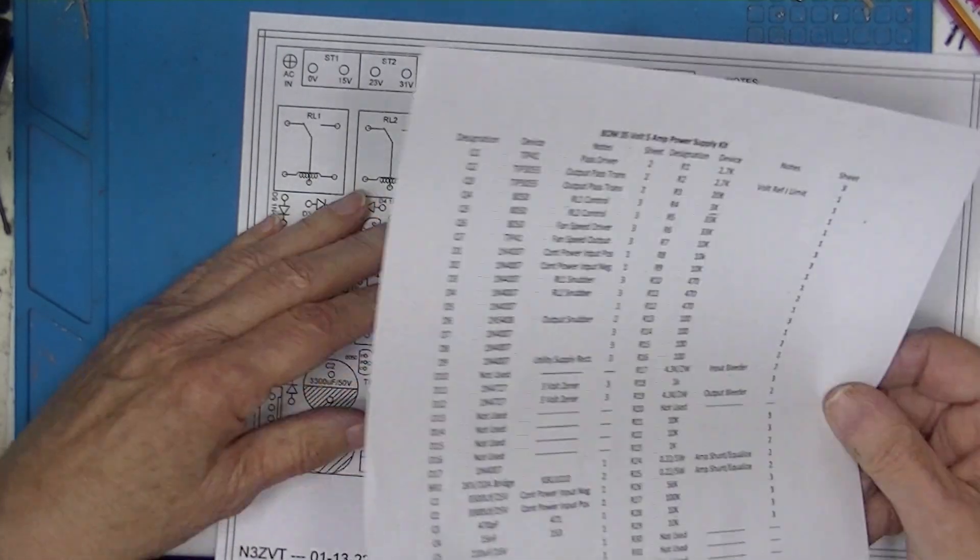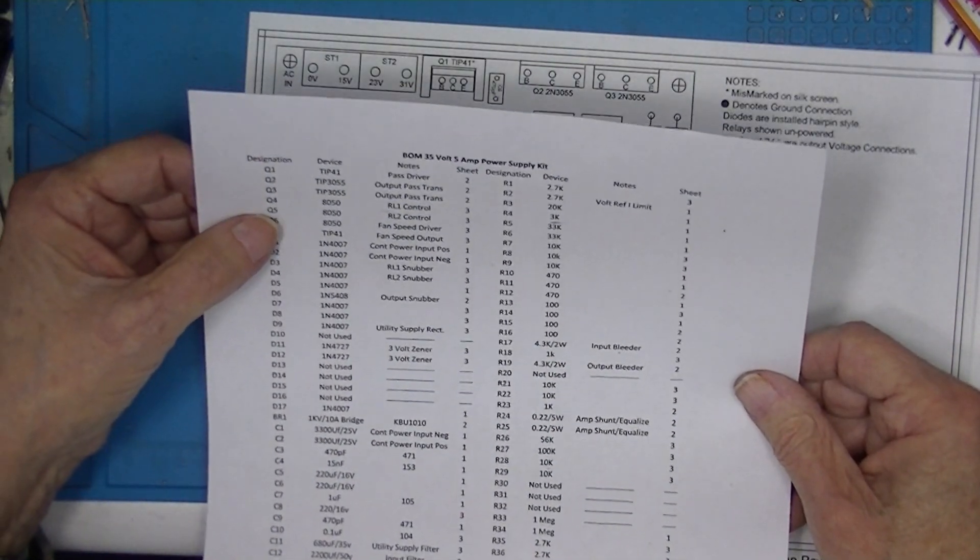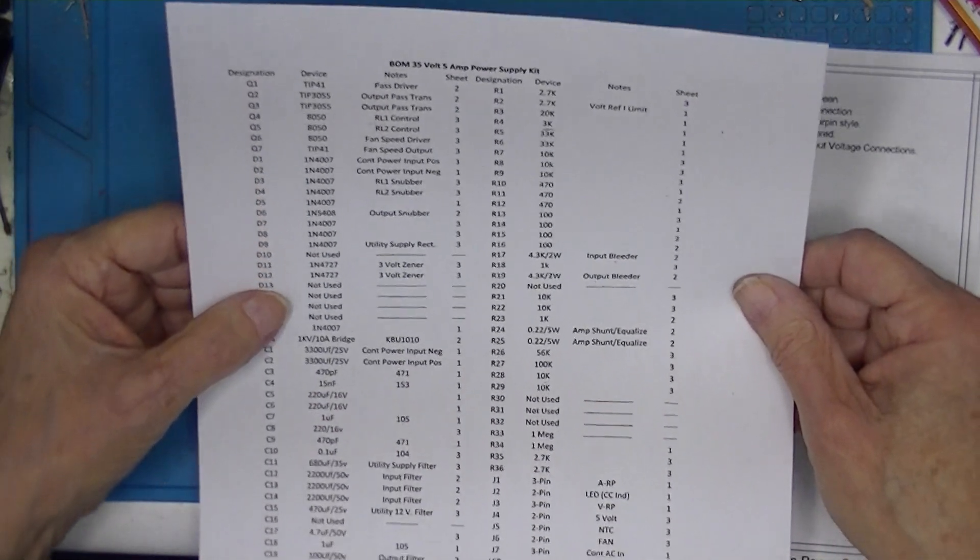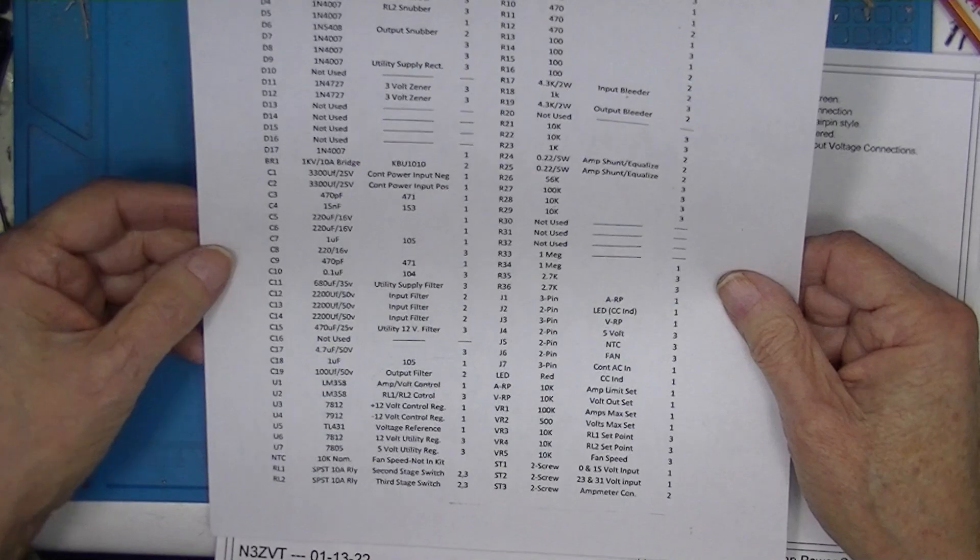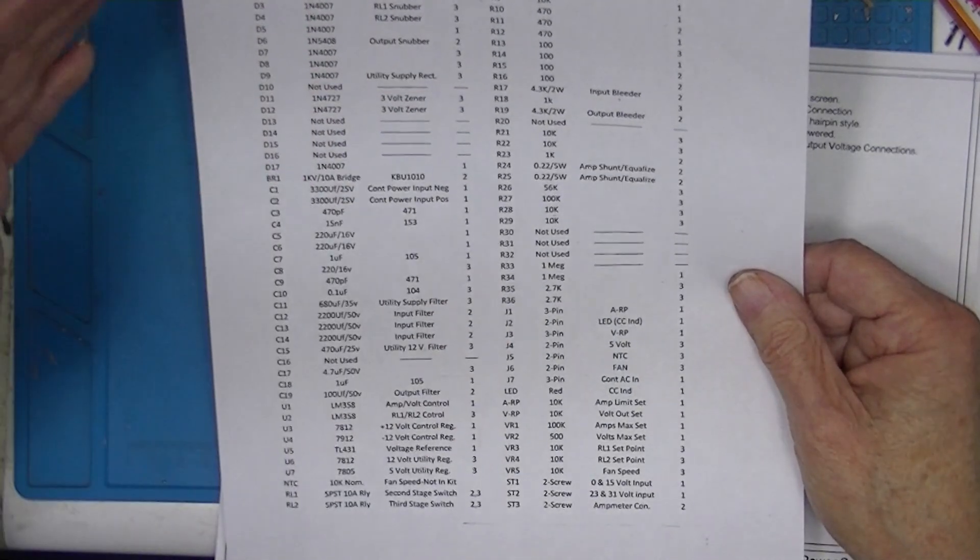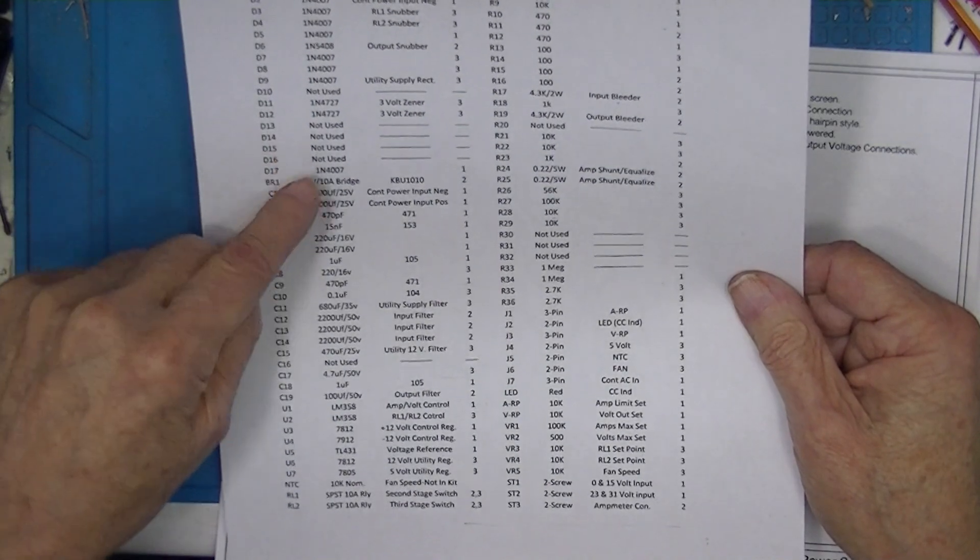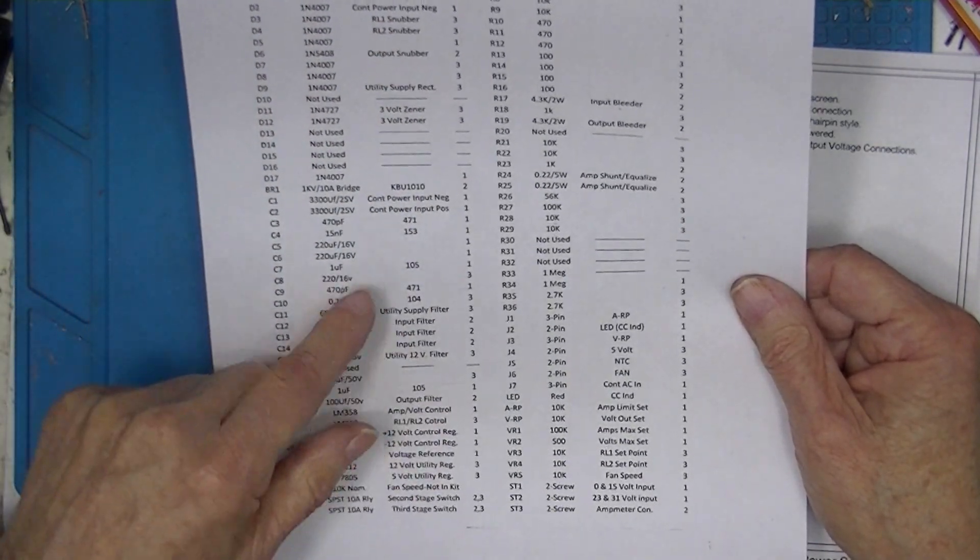To go with this, I came up with the bill of materials. Everything that's in the plastic box, except for the board itself, is on here. Well, excepting the fuse holder. Everything's on here with a designation and a description. In some cases, I describe what it's used for.